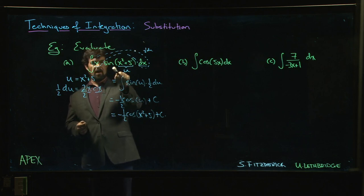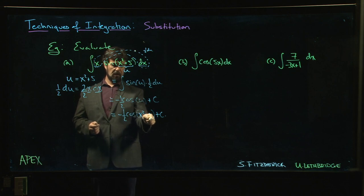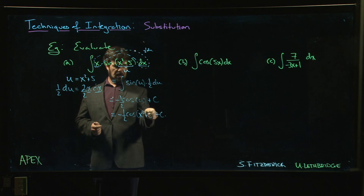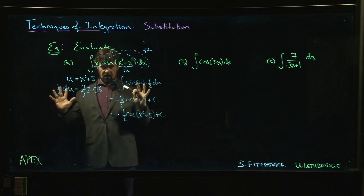If I take the derivative of minus one-half cosine of x squared plus five, what do I get? The constant stays there. Derivative of cosine gives me negative sine. That negative cancels this negative. I get sine of x squared plus five, then I multiply by the derivative of the inside, which is 2x. 2x times a half gives me the x. It works out. You can always check your answer, and it's usually not a bad idea to do so.